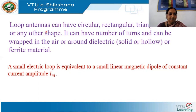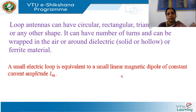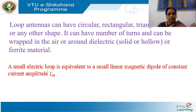When considering the circular loop antenna, it is equivalent to a linear magnetic dipole, assuming both carry the same current I_M. So the loop antenna carrying current I_M is equivalent to a linear magnetic dipole also carrying I_M — both can be considered the same.